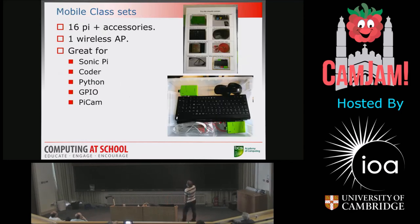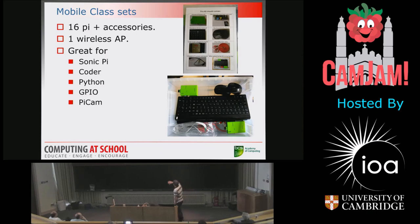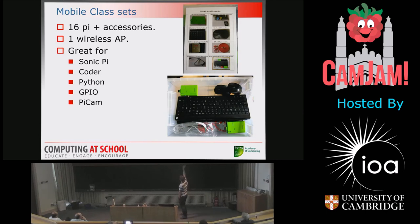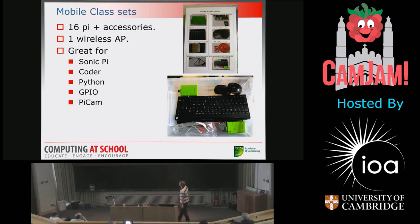Since then we've managed to get some funding from government and businesses, and we've purchased a set of kits for Key Stage 3. We now have a wireless access point and 16 Pis in boxes with keyboards, mice, Pi cams, and USB cables — everything you need. You just plug the Pi in, plug the keyboard in, and off you go. They're great for things like Sonic Pi — we're using that with Year 9s — Google Coder, and general Python and GPIO and camera work.